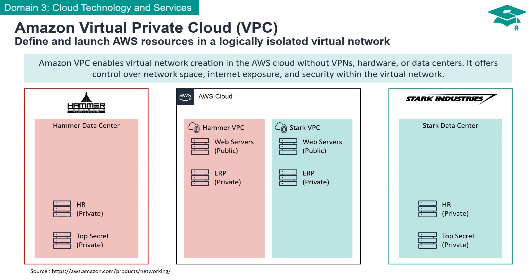With Amazon VPC, Stark Industries and Hammer Industries can confidently move their public web server and ERP server to the AWS Cloud. The logical isolation provided by VPC ensures that sensitive data and applications remain secure, even in a shared cloud environment.